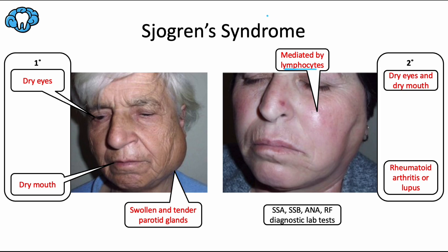Sjogren's syndrome involves lymphocytes flooding in, infiltrating, and destroying the lacrimal glands in the eyes and the salivary glands in the mouth. This leads to keratoconjunctivitis sicca, which is a fancy way of saying dry eyes, and xerostomia, which is a fancy way of saying dry mouth. These are the main two symptoms. The salivary glands tend to get swollen, tender, and inflamed as a result of the lymphocytic infiltration. Most commonly affected are the parotid glands, which you can see this patient's left parotid gland swelling up as a result.